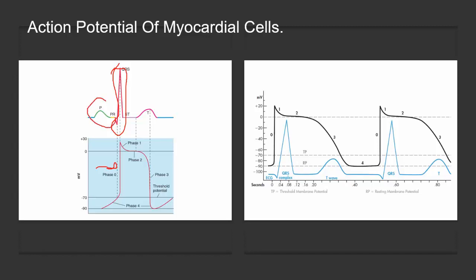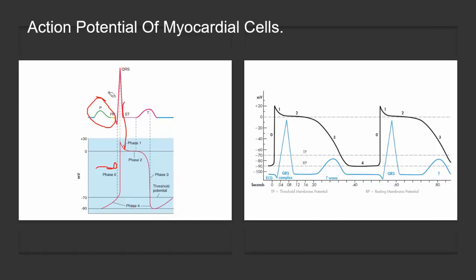The slow potential is what's on the SA node. After the rush of sodium into the cell and contraction, the remainder of time from phase one through phase four is when the cell is going back to its resting potential.